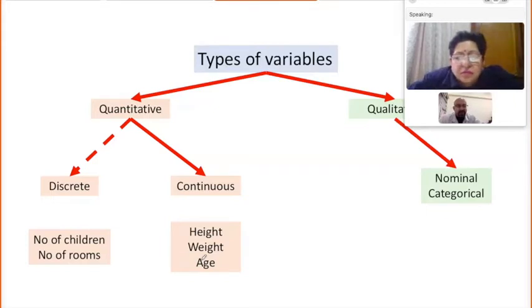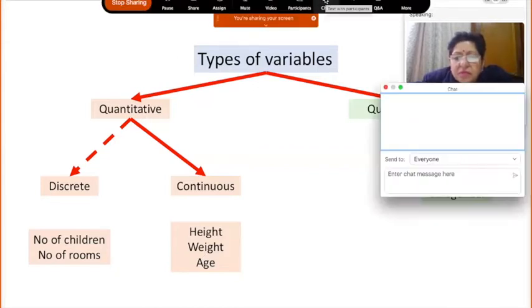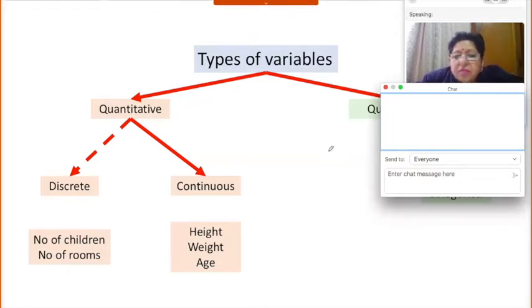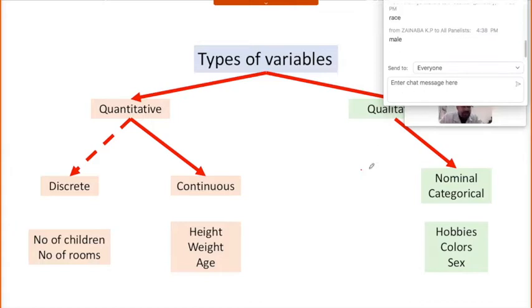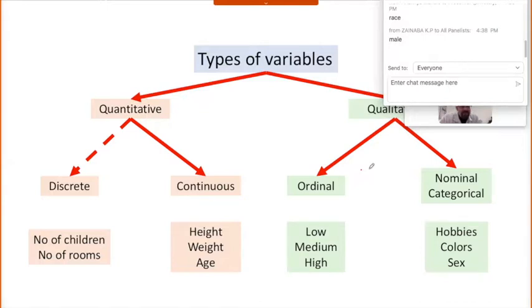On the other hand, qualitative variables are of two types: nominal or categorical, meaning just a category without any relation between categories — examples include hobbies, race, colors, or sex. The other kind of qualitative variables are ordinal: these are categories which have an inherent order between them.